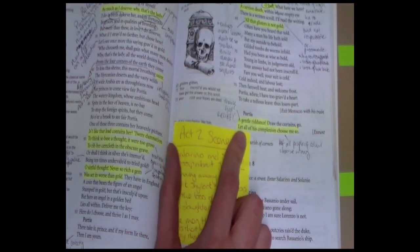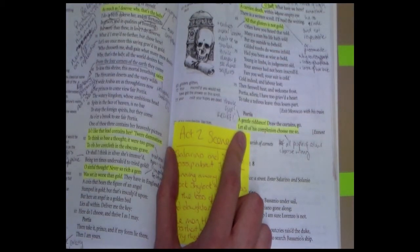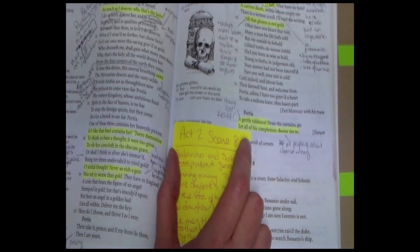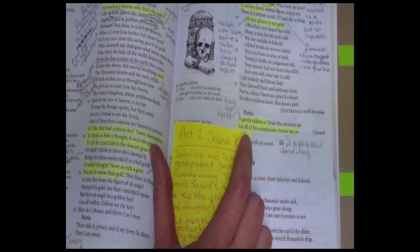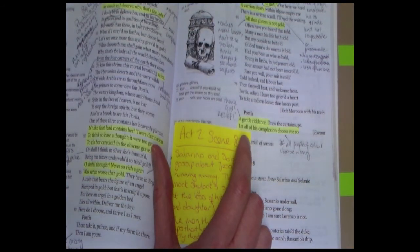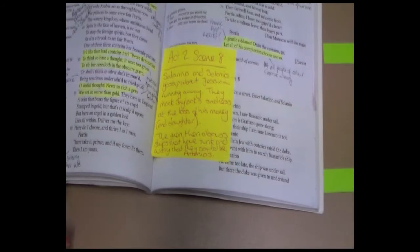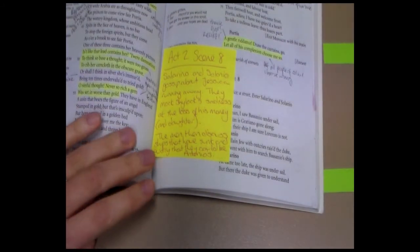Now at the end of the scene, Portia is very relieved that he hasn't selected the right casket, and she says a gentle riddance. She wants Morocco to leave. She hasn't enjoyed this process, and it's created an element of tension for the audience. This is Act 2, Scene 8.